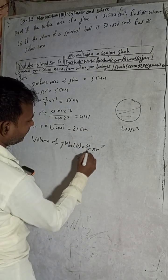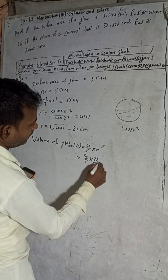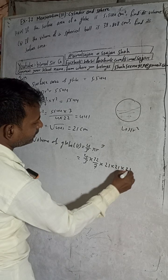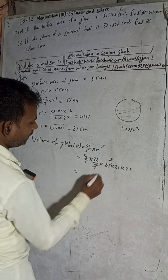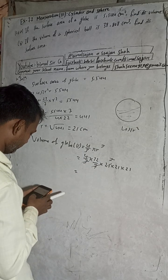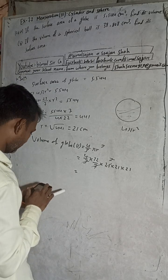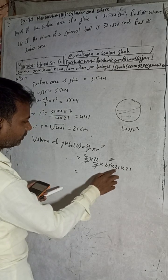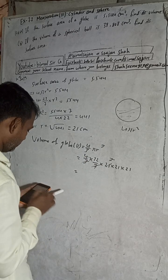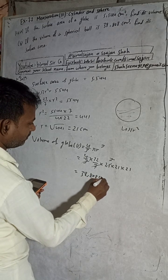Now for the volume of the globe, this is a sphere, so the volume formula is (4/3)πr³. Substituting: (4/3) × (22/7) × 21³ = (4/3) × (22/7) × 21 × 21 × 21. After cancellation — 7 cancels with 21, and 3 cancels — we get 38,808 cm³.